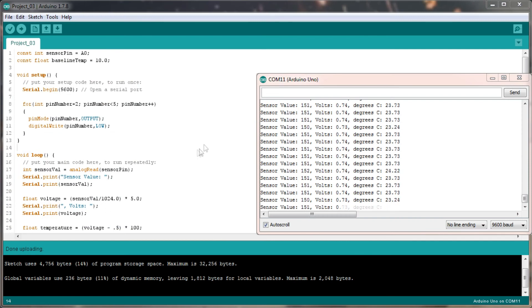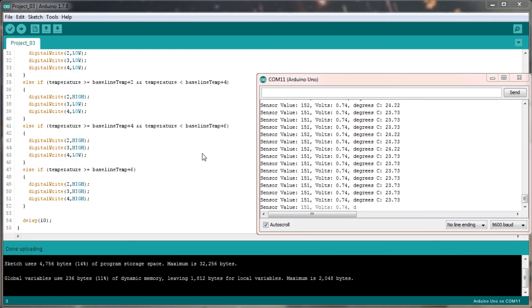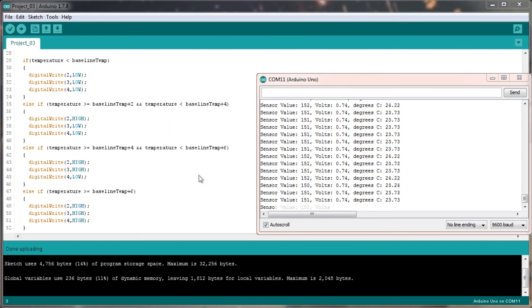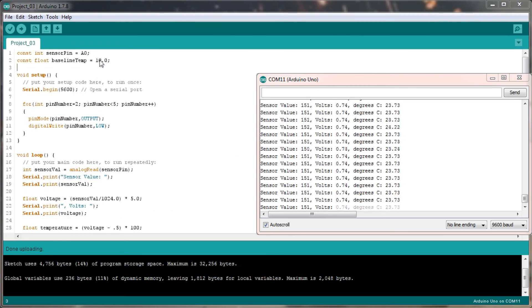Okay, so now we can actually see the COM output for the Arduino here, and you can see that the actual degrees centigrade in this room is around 23 degrees. What that means is that because our baseline temperature was set to 10 degrees, and we were looking at anything between 10 and 18 degrees, then every single time we look at this, it's going to be out of range. So we're going to change this baseline temperature to 20 degrees, and then I'll just close the COM output and re-upload this.